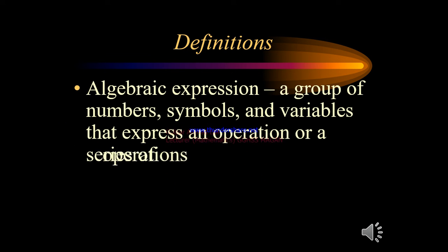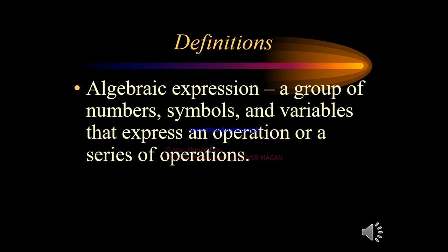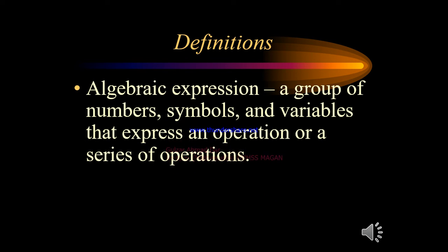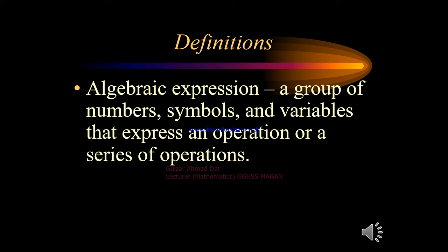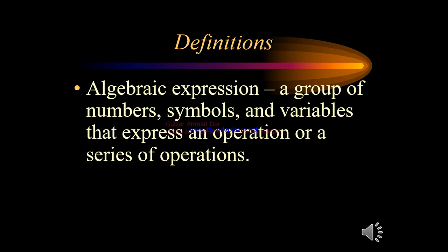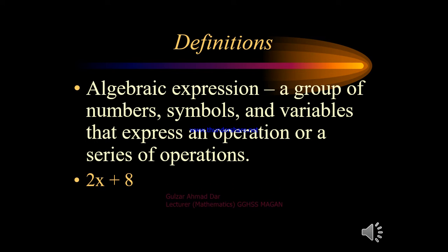An algebraic expression is a group of numbers, symbols, and variables that express an operation or a series of operations. For an algebraic expression we must have three things: number one, numbers; number two, symbols or the basic mathematical operations; and number three, variables.